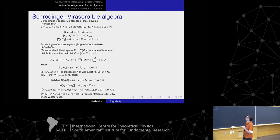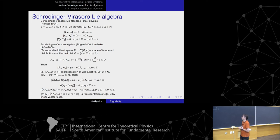The Schrödinger-Virasoro Lie algebra is, by definition, a certain extension of the Witt algebra. What we do: we first take some realization of the Witt algebra, then apply the Jordan-Schwinger map. We choose a certain set of directions and using derivatives in that set of directions, we get a realization of the Schrödinger-Virasoro Lie algebra. This result appears to be new.